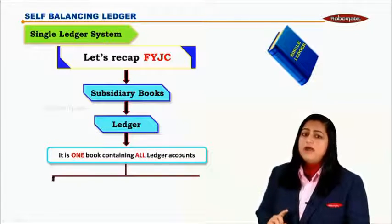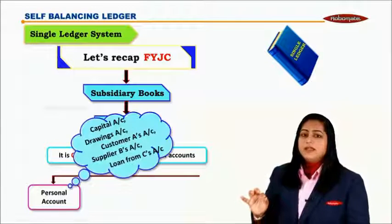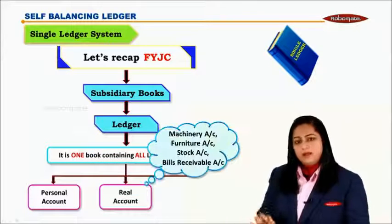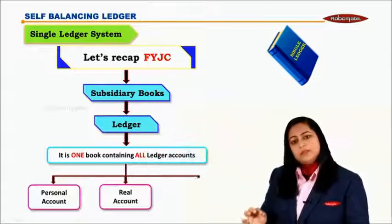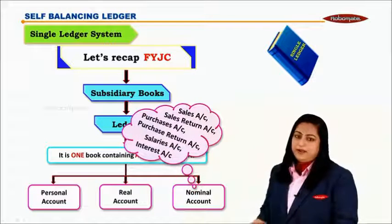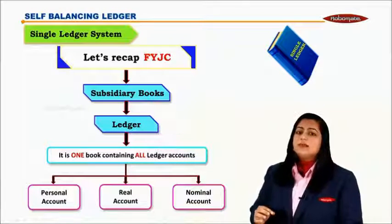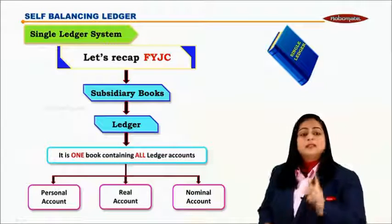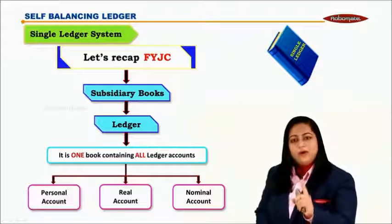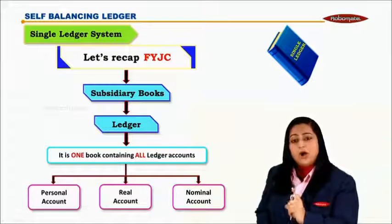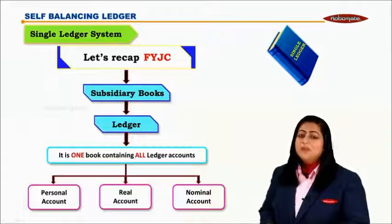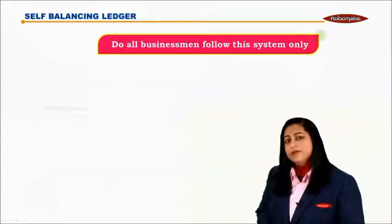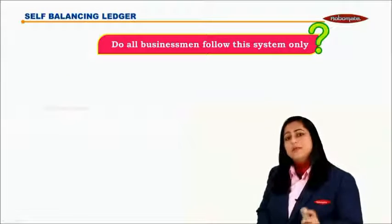In that one book, I have all my personal accounts; in the same book I have all real accounts; and in the same book I have all nominal accounts. This system is termed as the single ledger system — one book where I am maintaining all my ledger accounts. Now I have a small question: do you think all businessmen follow this system?